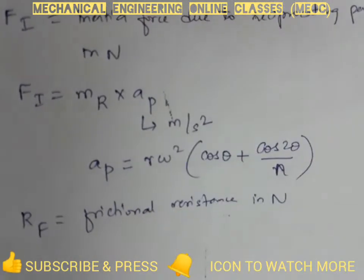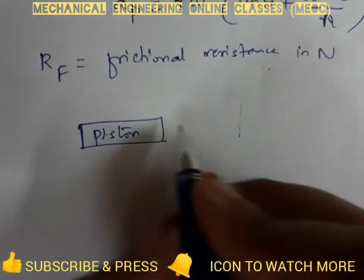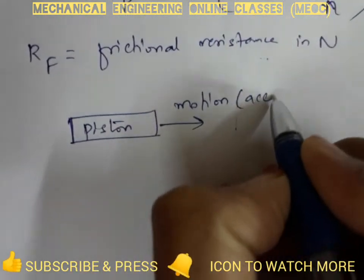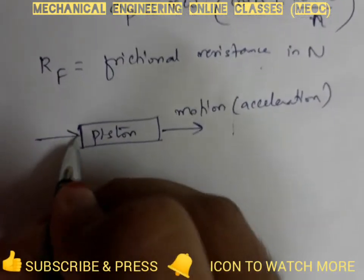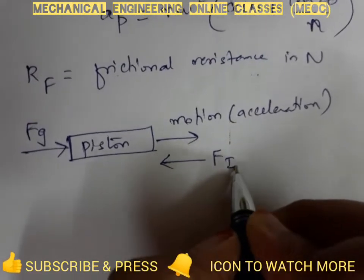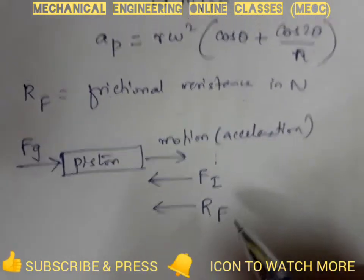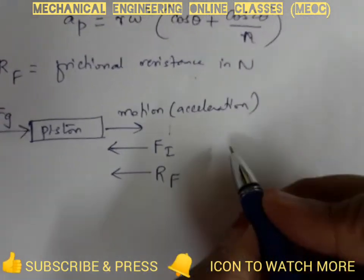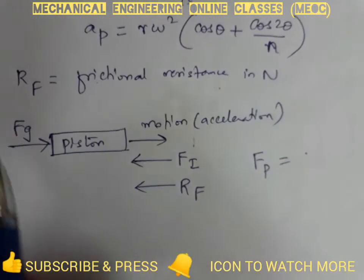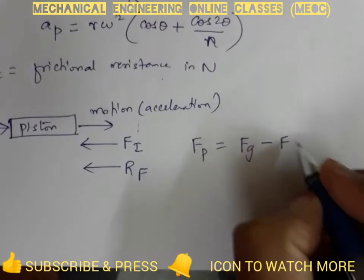Let RF be the frictional resistance in newtons. Case 1: when the piston is moving towards IDC, the motion is rightward and the piston is under acceleration. Fg always acts from the left side. Both the inertia force and frictional resistance oppose the motion, so they act leftward. The net axial force or piston effort, taking rightward as positive, is: Fp equals Fg minus FI minus RF.